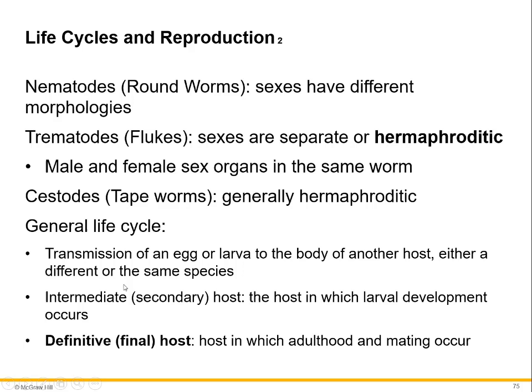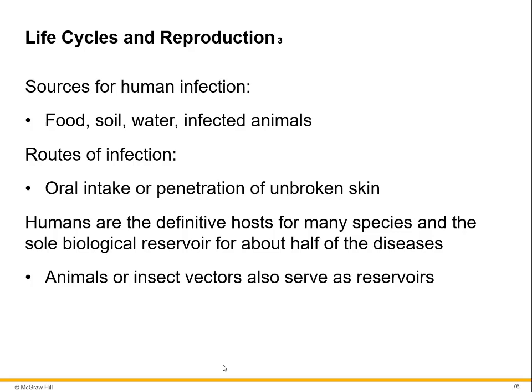The main differentiator the course asks about is: are they round or flat, and are they segmented or non-segmented? For the general life cycle, transmission is either via egg or larva, and there's sometimes an intermediate host where the larva develops. If there is an intermediate host, the larva ends up in the definitive or final host — which could be you. Transmission can be through food, soil, or water, and infected animals. They can enter through unbroken skin or be eaten or drunk. Humans are the definitive host for many species and the sole biological reservoir for about half of the diseases. Animals or insect vectors can also serve as reservoirs.